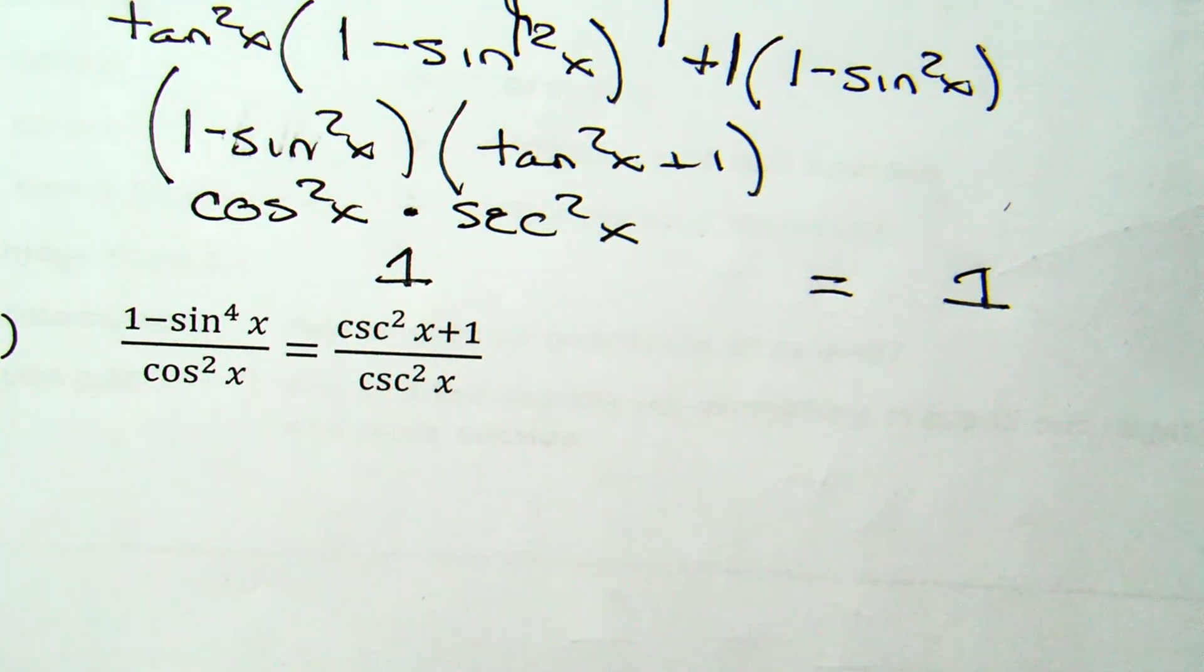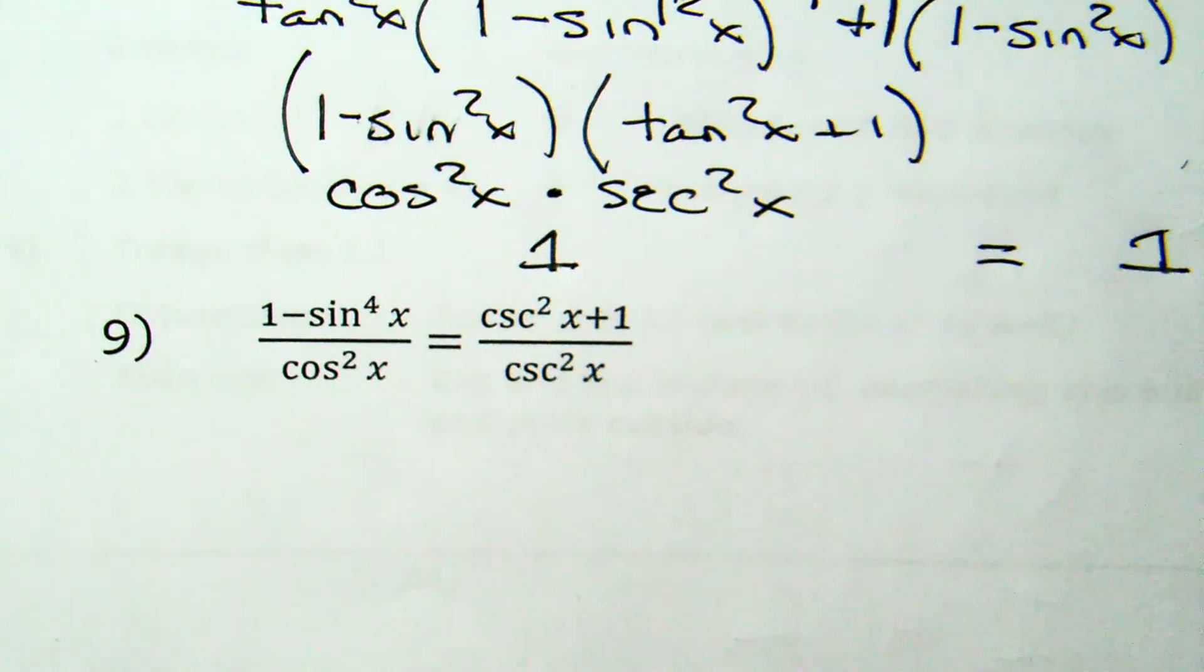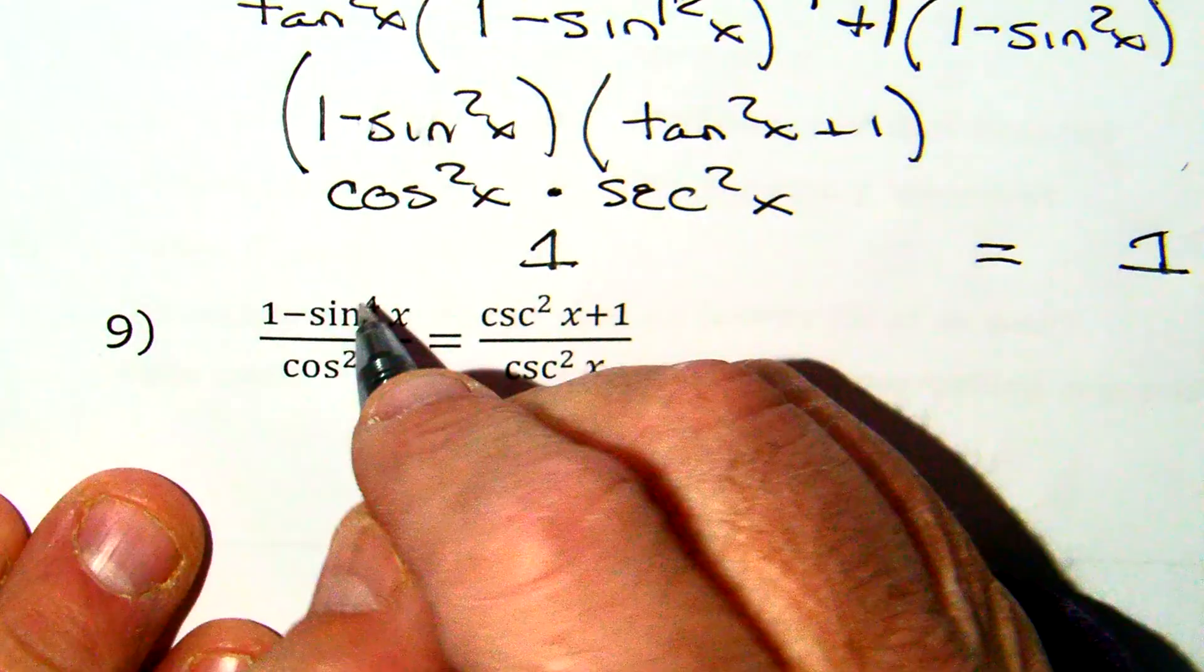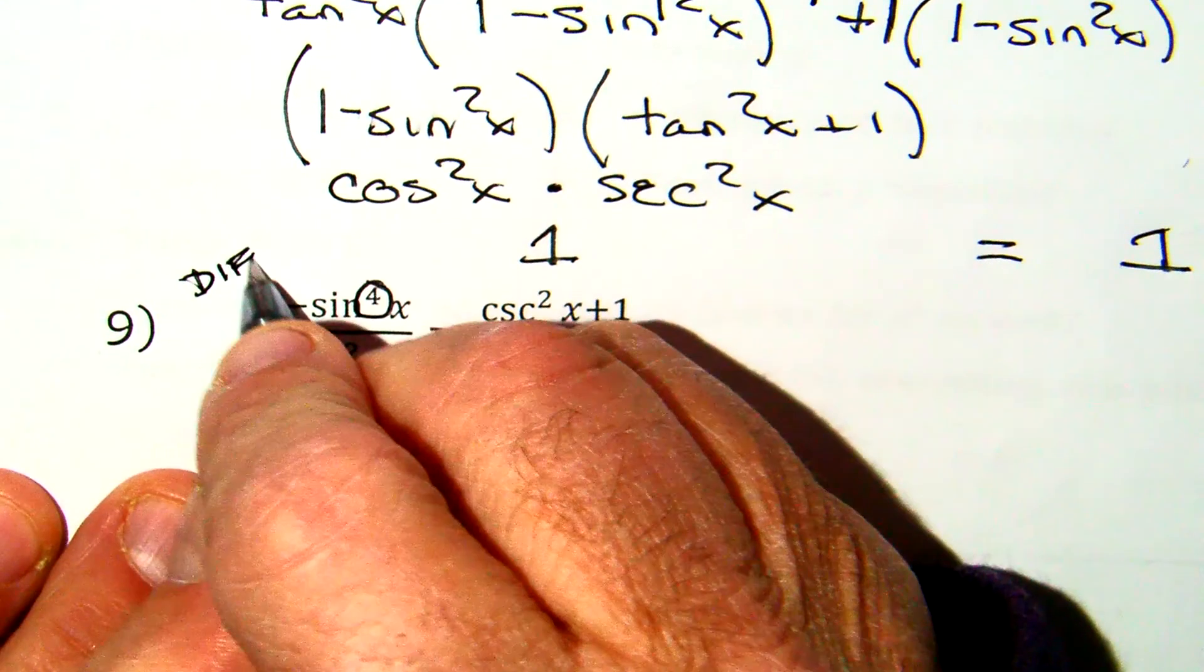Next problem: when you see a binomial whose degree is greater than two, in this case four, you're going to think of a difference of two squares.